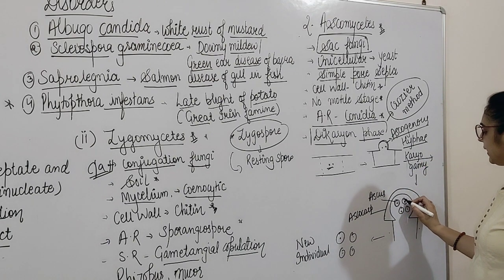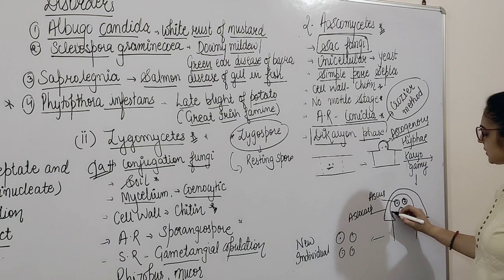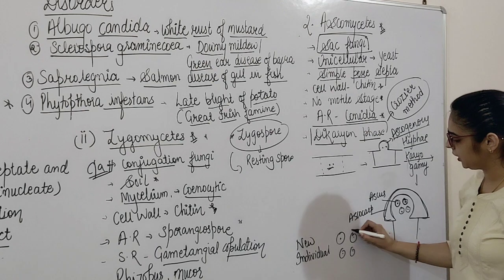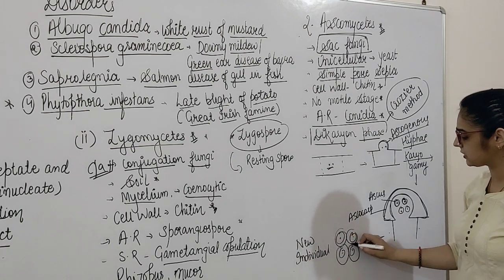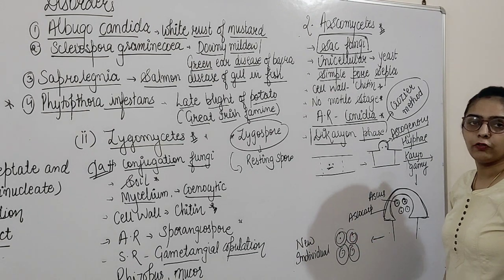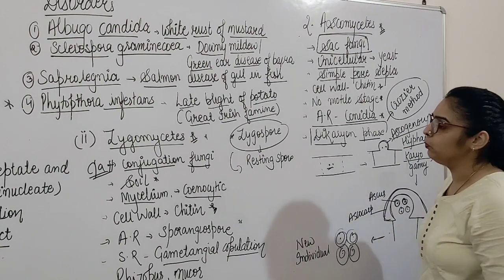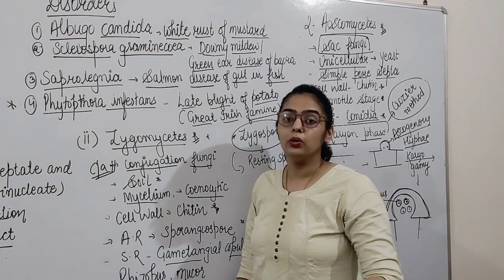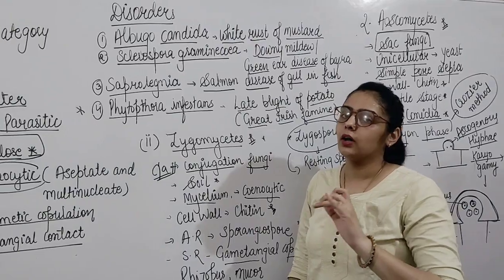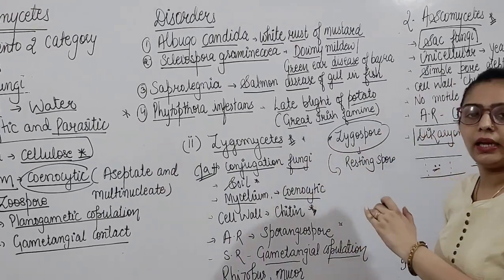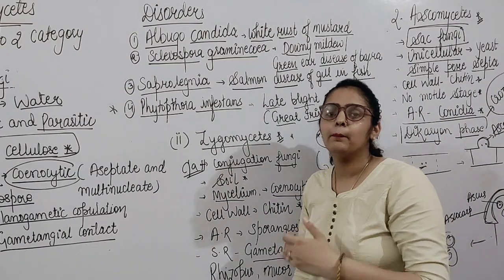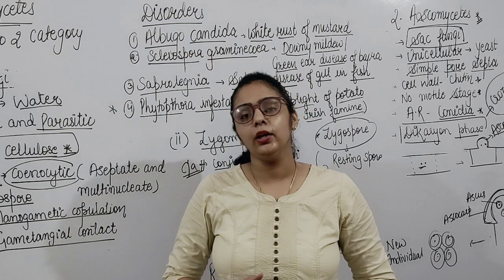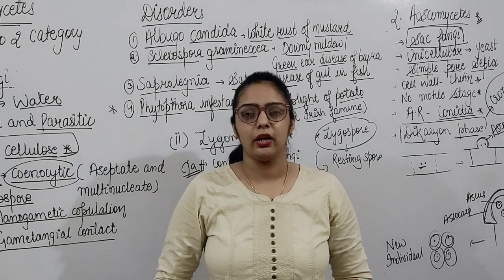In Ascomycetes, fusion occurs forming many asci, and a covering forms around them known as ascocarp. Examples of Ascomycetes and the diseases they cause will be covered in the next video. If you like this video, please share and subscribe to the channel. Thank you.